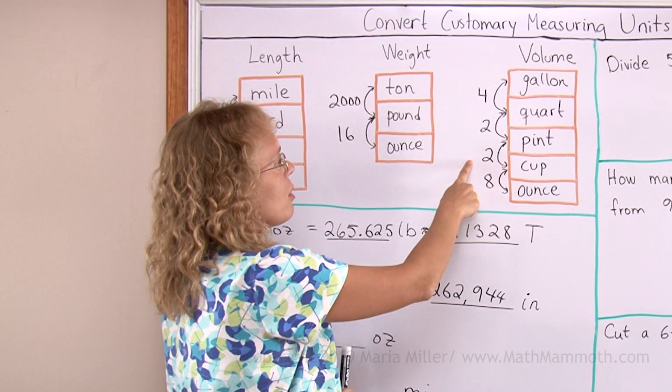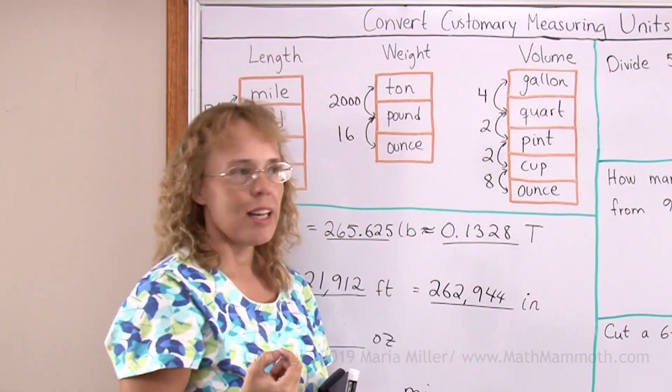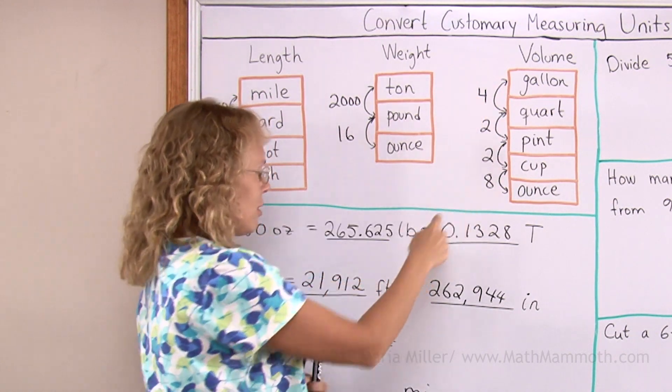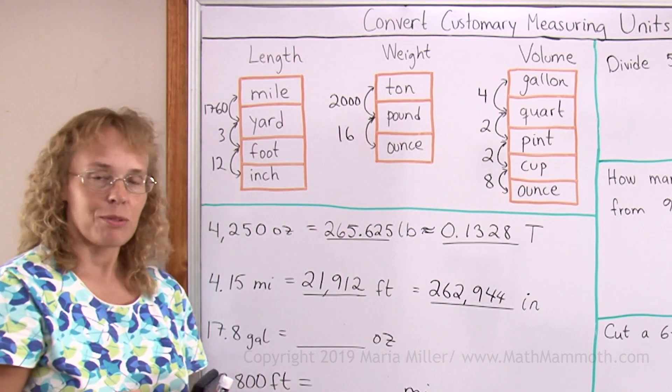Okay, that is, times 4 is 32 times 4 is 128. From here to here is 128. So I need to take this number and multiply or divide by 128. Which one?